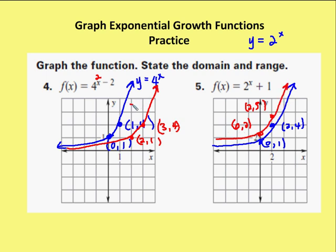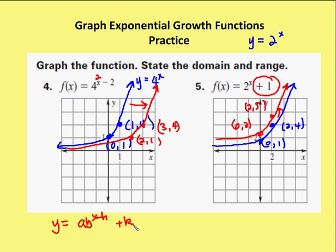In the first example I shifted the graph to the right horizontally, and here I'm shifting the graph up by one. So we shifted right by two and here up by one. We remember our formula: y = a·b^(x–h) + k, where h is the horizontal shift and k is the vertical shift.